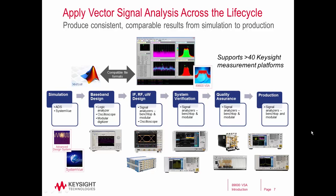With the 89600 VSA software, you have a whole variety of options in terms of the hardware or measurement front end that you're going to use to provide data to the software. The 89600 VSA software supports over 40 different Keysight measurement platforms. Depending on where you are in the design process, you can select the measurement front end that best fits your needs. Very early on in your product design life cycle, you can use the VSA software directly with things like MATLAB, ADS, or SystemView in a co-simulation mode. Then as you move along through your design process — through initial testing, turn-on, design validation, and production — you can select the hardware front end that best meets your needs.